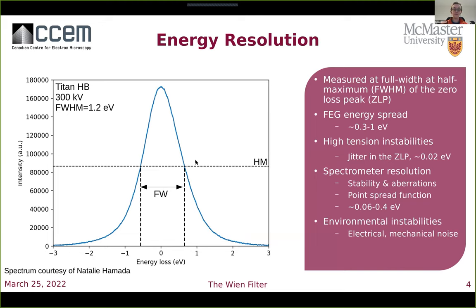This energy resolution is dominated by the energy spread of electrons as emitted from the FEG itself, and can be made worse by instabilities in the high tension, instabilities and aberrations in the spectrometer, the point spread function of the camera used on the spectrometer, or electromagnetic or mechanical noise from the environment. Using a monochromator can help us reduce at least the energy spread from the FEG in order to resolve finer features in our spectrum.